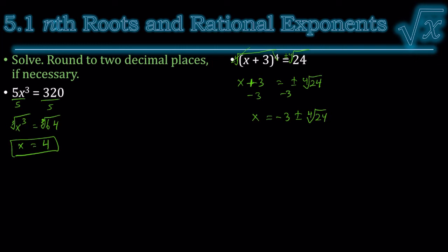And it said, round to two decimal places if necessary. So negative 3 plus the 4th root of 24 is negative 0.79. If we use the minus, we get negative 5.21. And of course we should check our answers by plugging them back in.